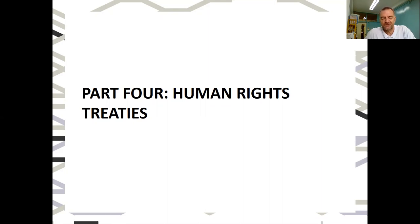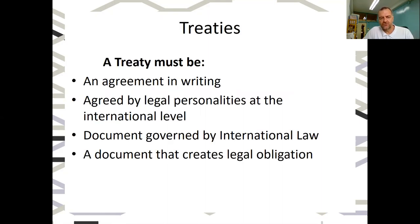Human rights are based on those nine core conventions, but it's not just limited to those nine. So let's look at what treaties are and what they mean. To be a treaty, there has to be an agreement in writing between two legal personalities at the international level, which typically tend to be states. So when at least two states have an agreement in writing between themselves, that can be a treaty.